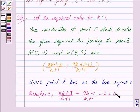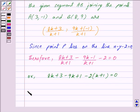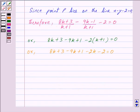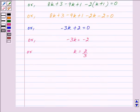Simplifying: 8k + 3 - (9k - 1) - 2(k + 1) = 0, which gives 8k + 3 - 9k + 1 - 2k - 2 = 0. Collecting terms: (8k - 9k - 2k) + (3 + 1 - 2) = 0, so -3k + 2 = 0, giving k = 2/3.